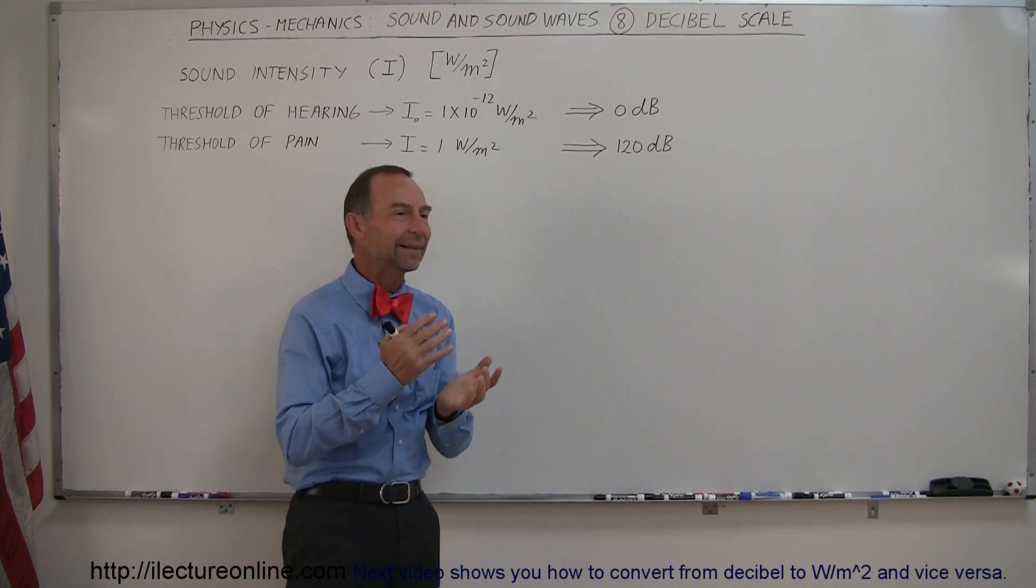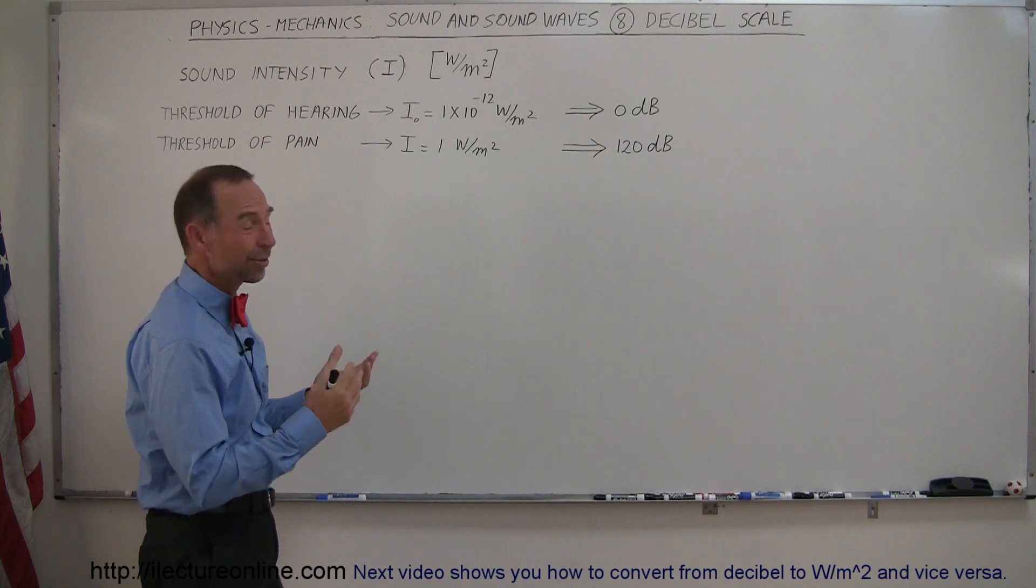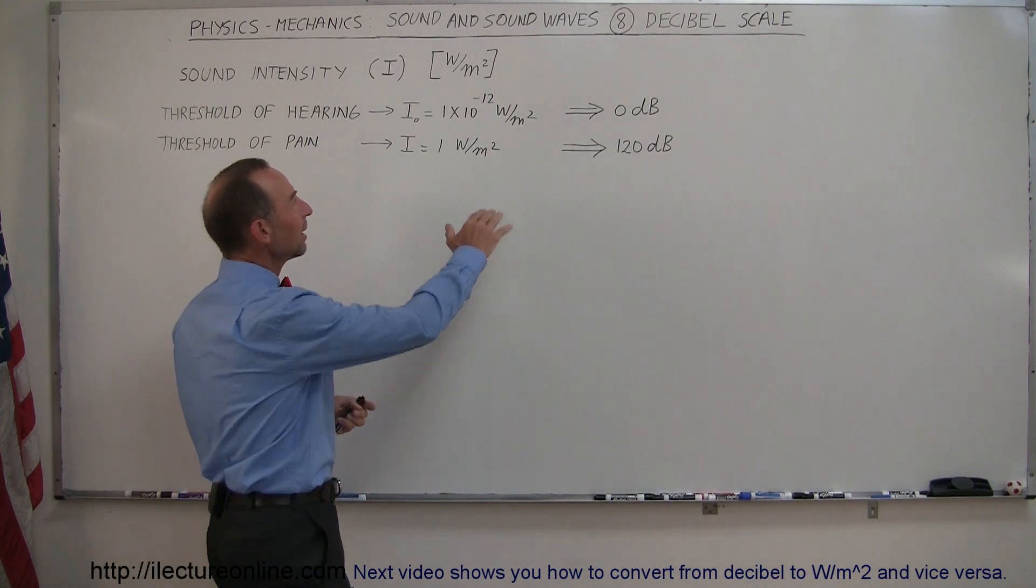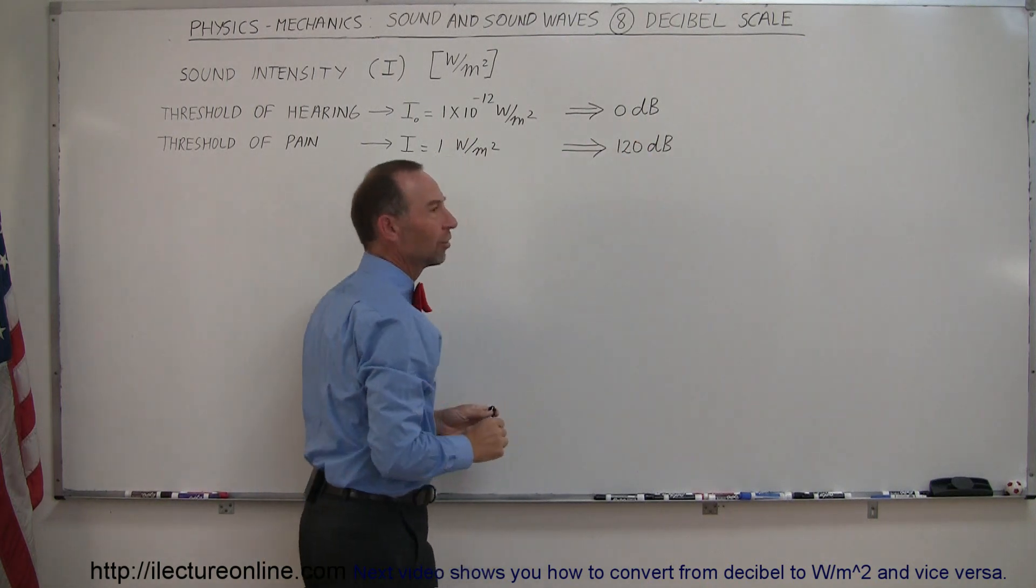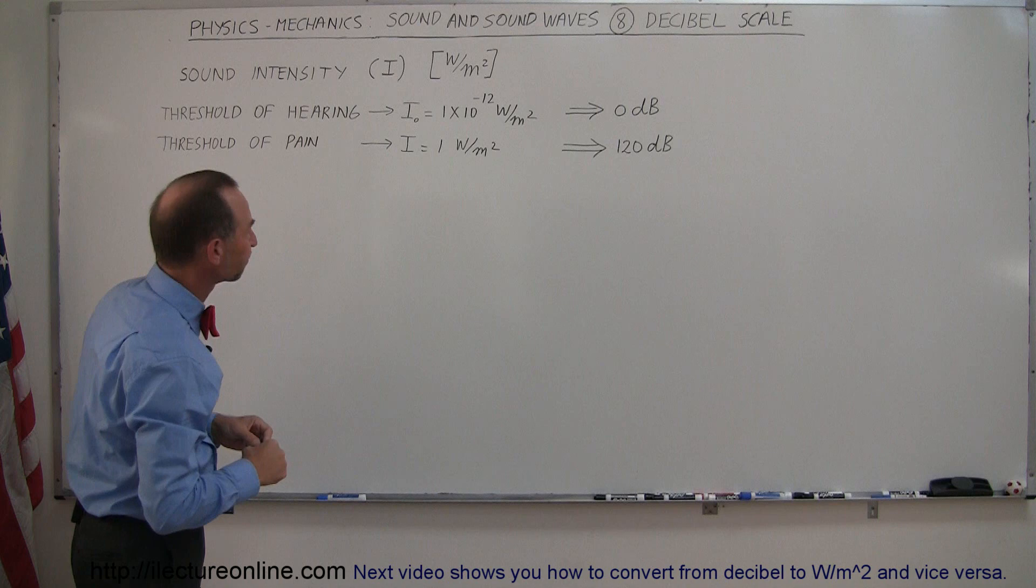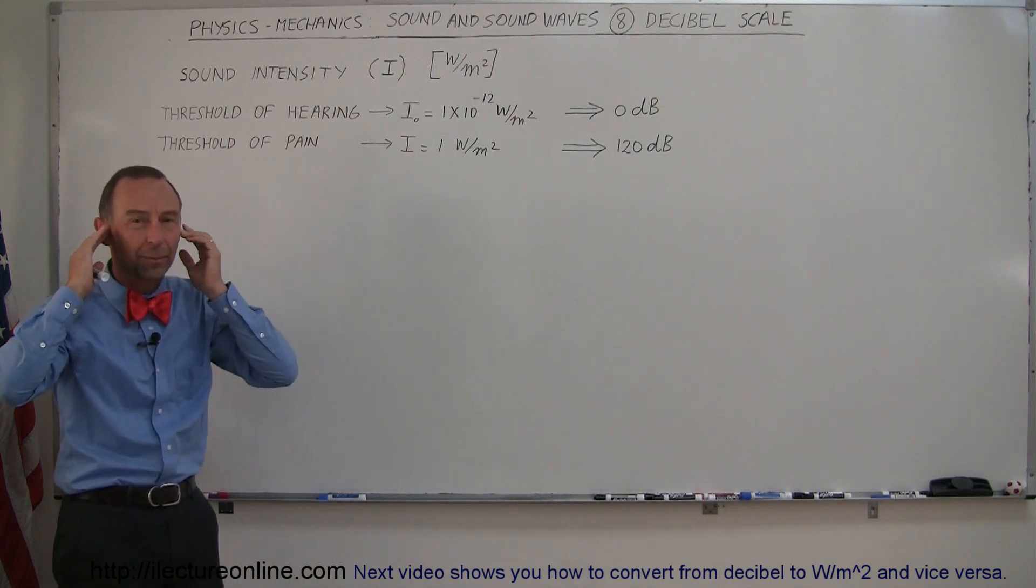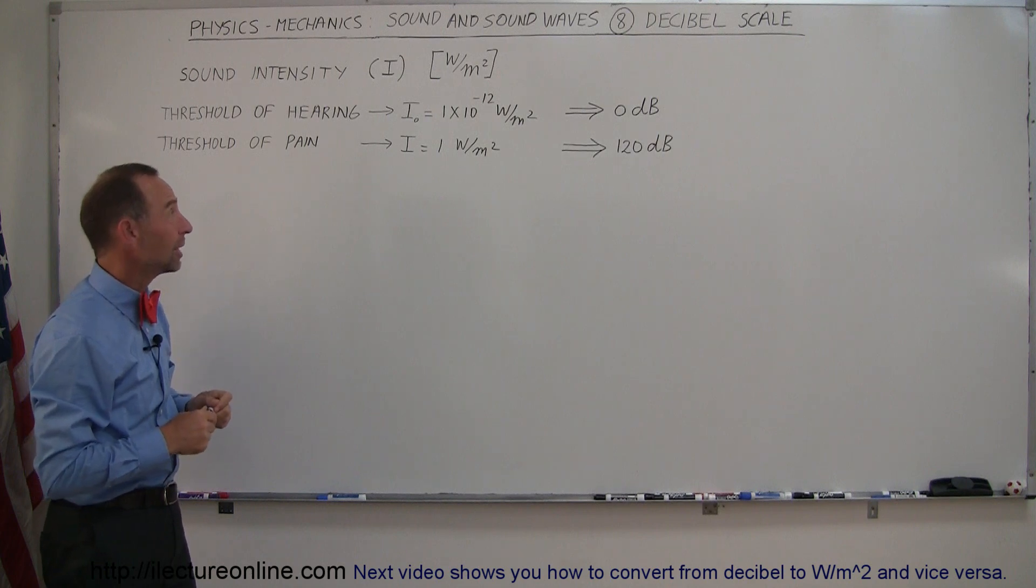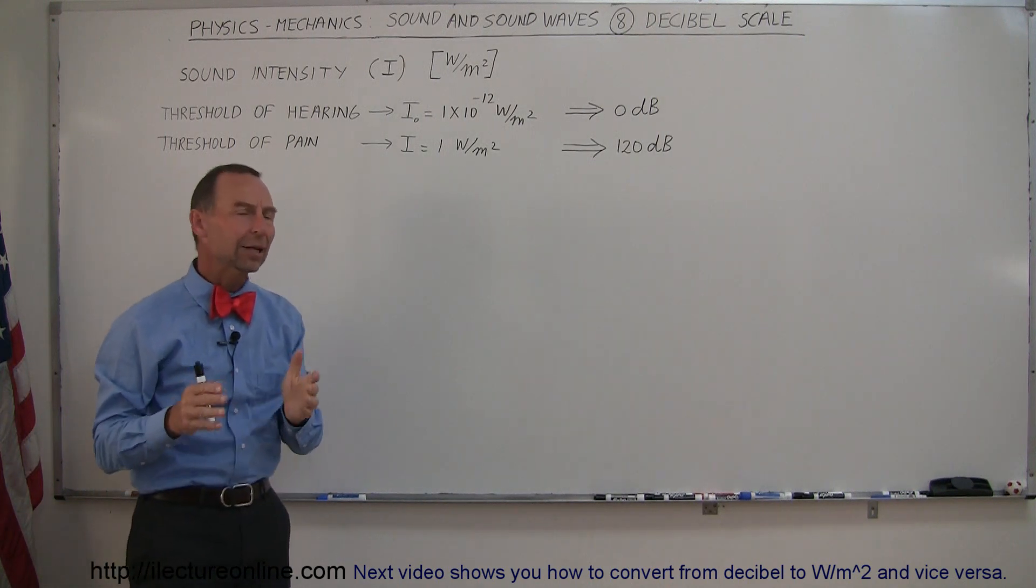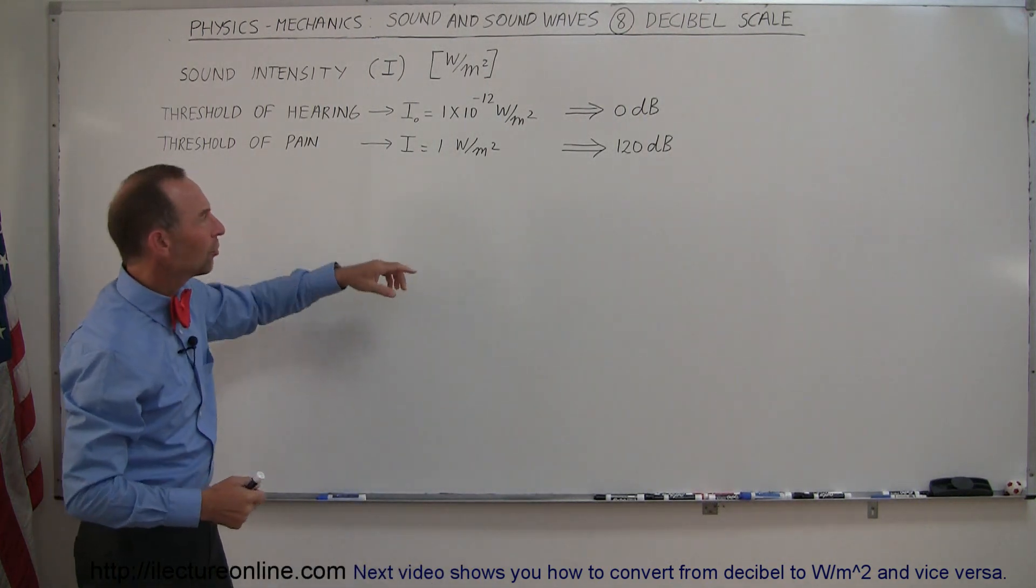So we want to come up with a scale that makes it a lot easier to work with these huge numbers. 10 to the minus 12 is very tiny, and so we equated that to zero decibels. If someone says I hear a sound of zero decibels, they have very good hearing. The threshold of pain, where if you hear a sound you want to cover up your ears because it's hurting your ears, is a sound intensity of about 1 watt per square meter, and that equates to 120 decibels.